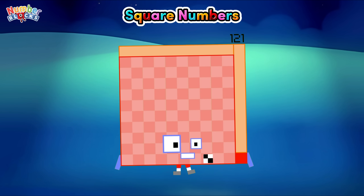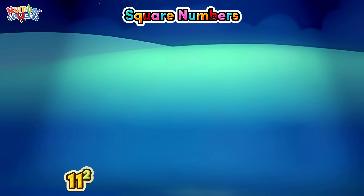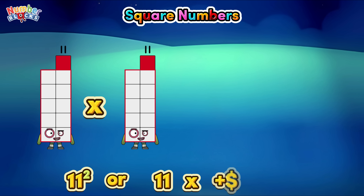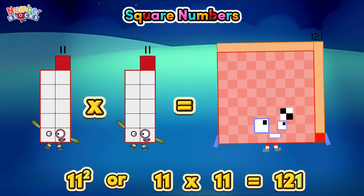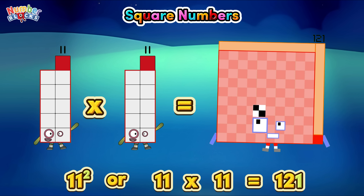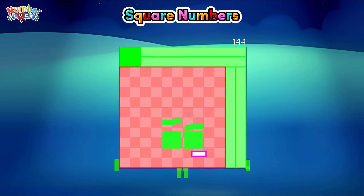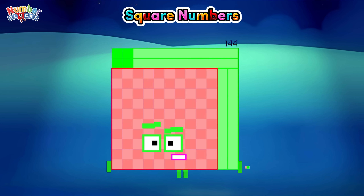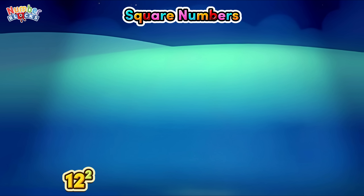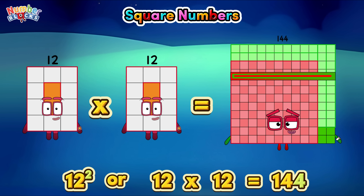One hundred and twenty-one. Eleven square, or eleven times eleven, is equals to one hundred and twenty-one. One hundred and forty-four. Twelve square, or twelve times twelve, is equals to one hundred and forty-four.